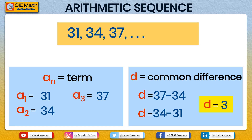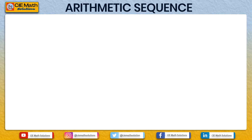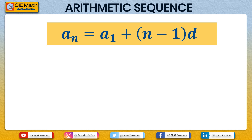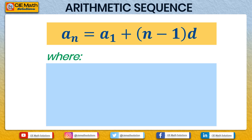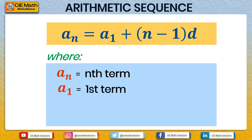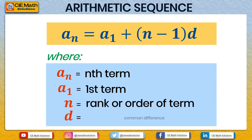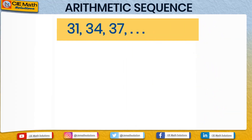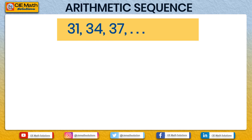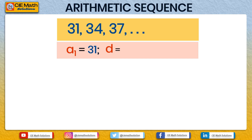Now let us find the general rule for the nth term using the formula an = a1 + (n − 1) × d. In this formula, an is the nth term, a1 is the first term, n is the rank or order of the term, and d is the common difference. For the sequence 31, 34, 37, a1 = 31 and d = 3, since 34 − 31 = 3 and 37 − 34 = 3.